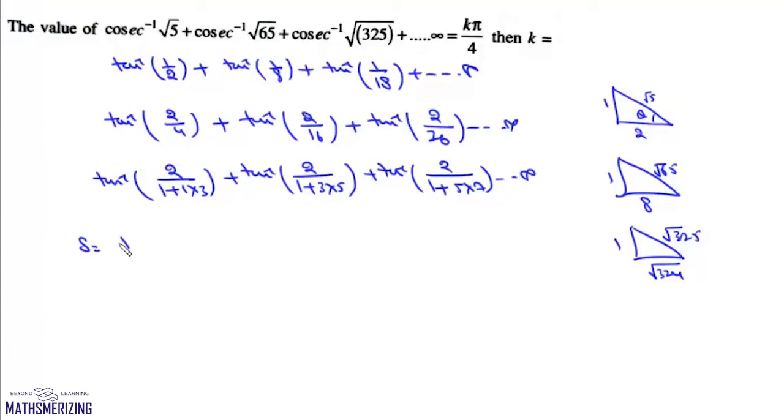So we can write this series as tan inverse 3 minus 1 upon 1 plus 1 into 3, tan inverse 5 minus 3 upon 1 plus 3 into 5, tan inverse 7 minus 5 upon 1 plus 5 into 7, and so on.